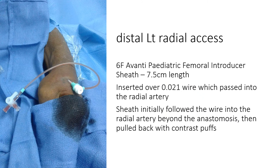We used a six-French Avanti pediatric femoral introducer sheath, 7.5 cm long. The picture here is of the patient described in the case. We inserted the sheath over a 0.021" wire. The wire initially passed into the radial artery and the sheath followed it. We slowly pulled the sheath back under fluoroscopic guidance as we injected a small contrast pass until we ended in the radial artery just away from the anastomosis.